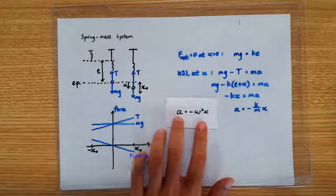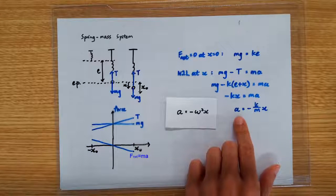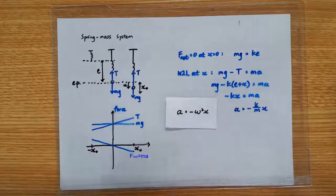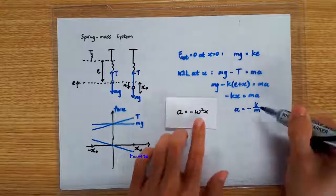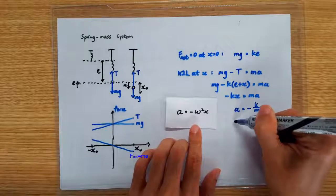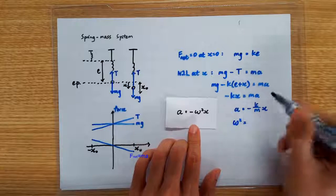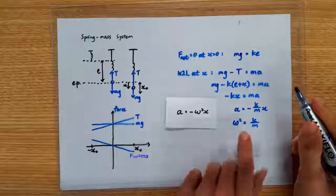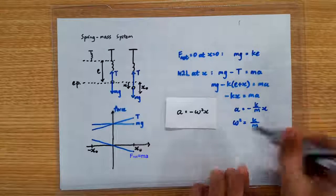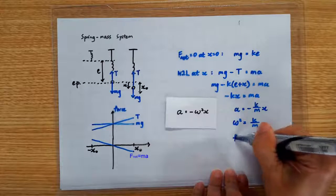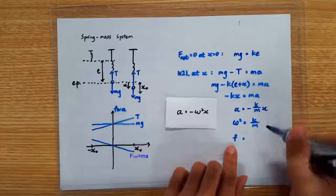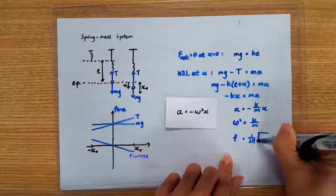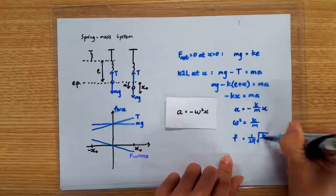Now that we know for a spring-mass system that a equals negative k over m times x, we can by simple pattern matching realize that omega squared equals k over m. And since omega equals 2π f, we know that the frequency of a spring-mass system is given by 1 over 2π times the square root of k over m.